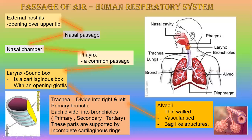The trachea has C-shaped cartilaginous rings to prevent collapse. Without cartilage, there would be a collapse and the airway could not be kept open — that structure would be called the esophagus. When we swallow, there is no C-shaped cartilage in the esophagus, unlike the trachea which has C-shaped cartilaginous rings.